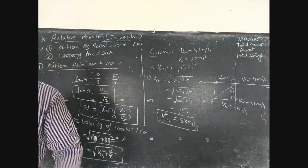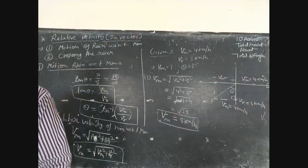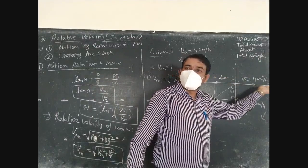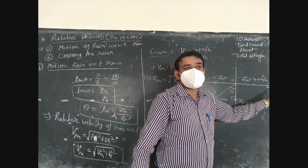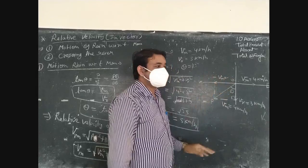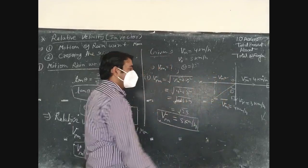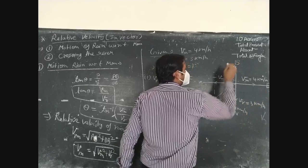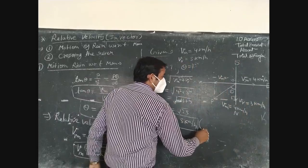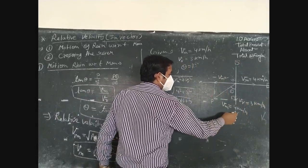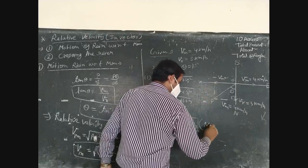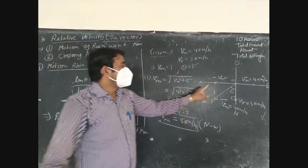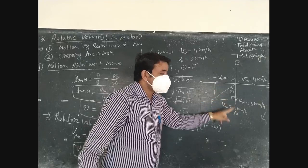Many times it is also asked what is the direction of the resultant velocity. Because the person is moving in the forward direction towards east, the resultant is in the negative direction relative to the person. So the direction of the relative velocity is north-west.